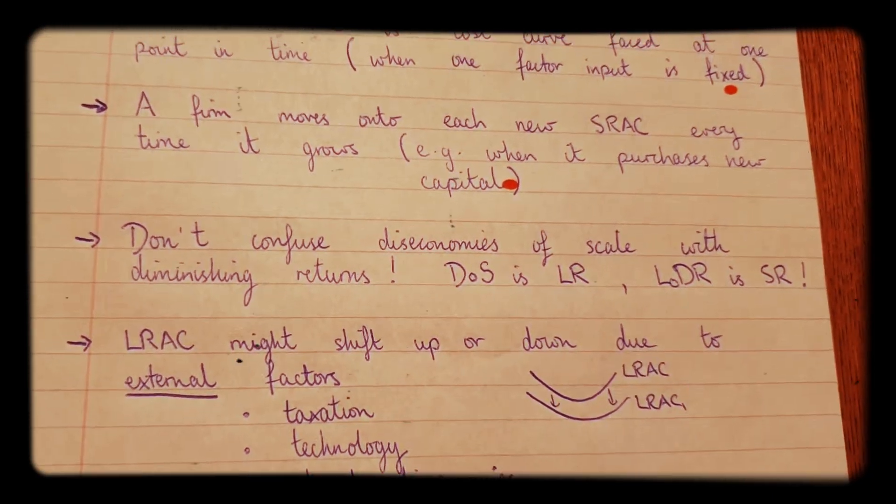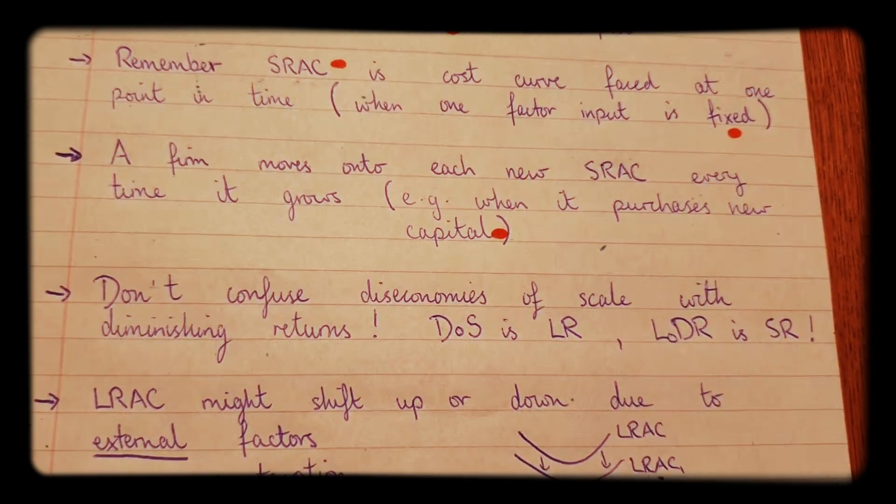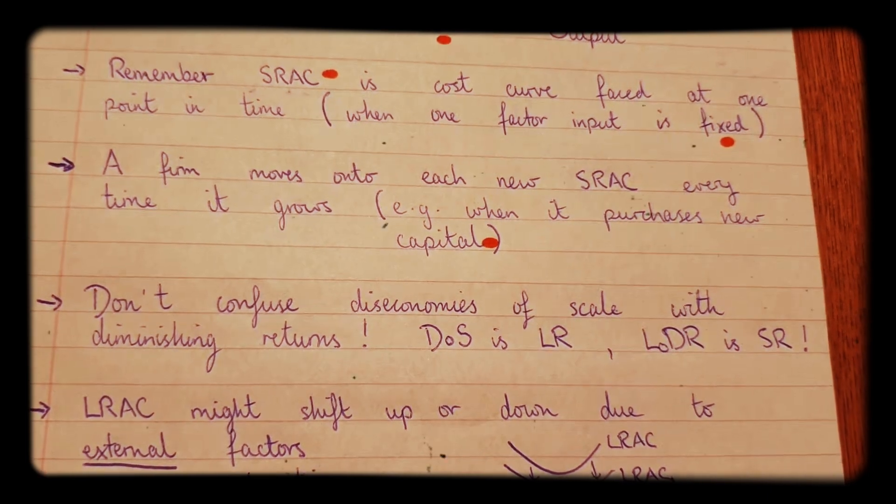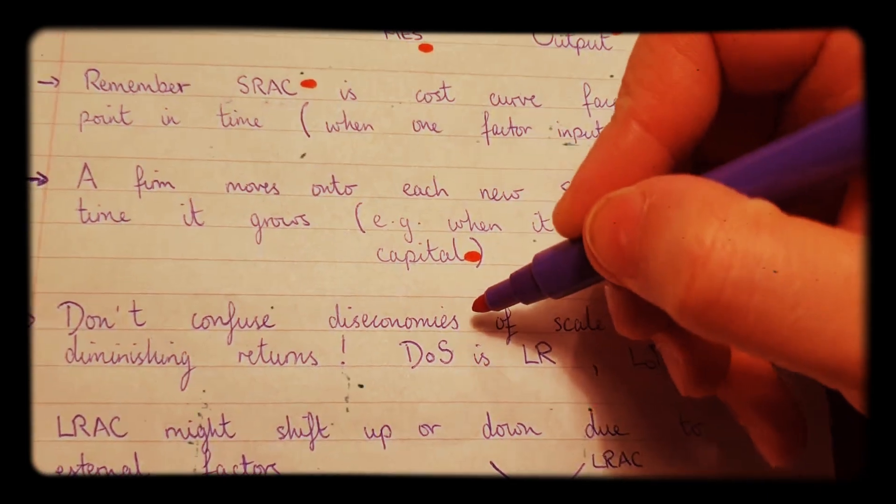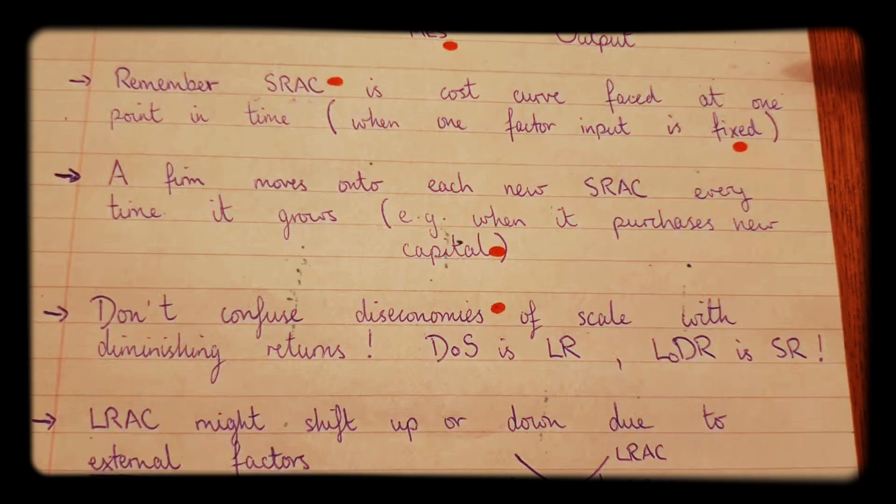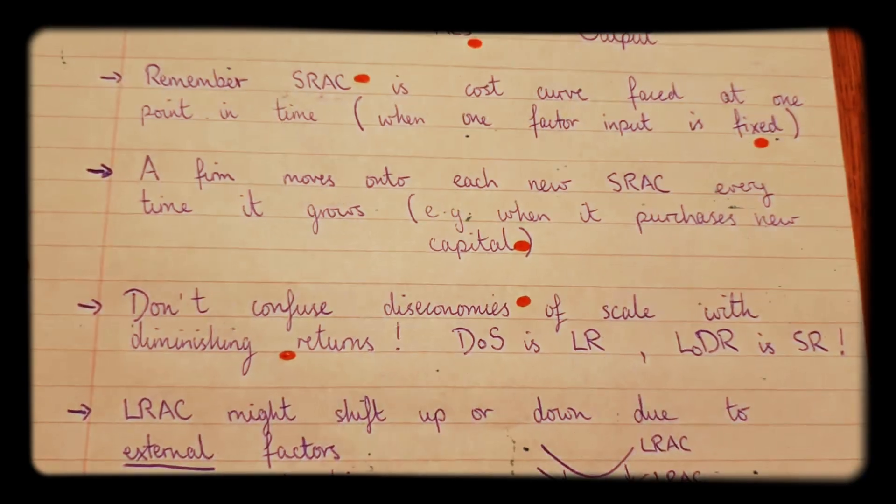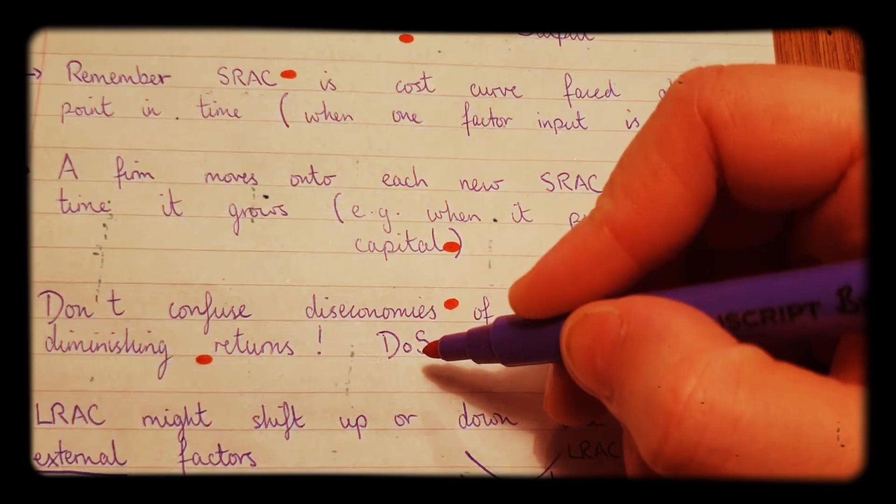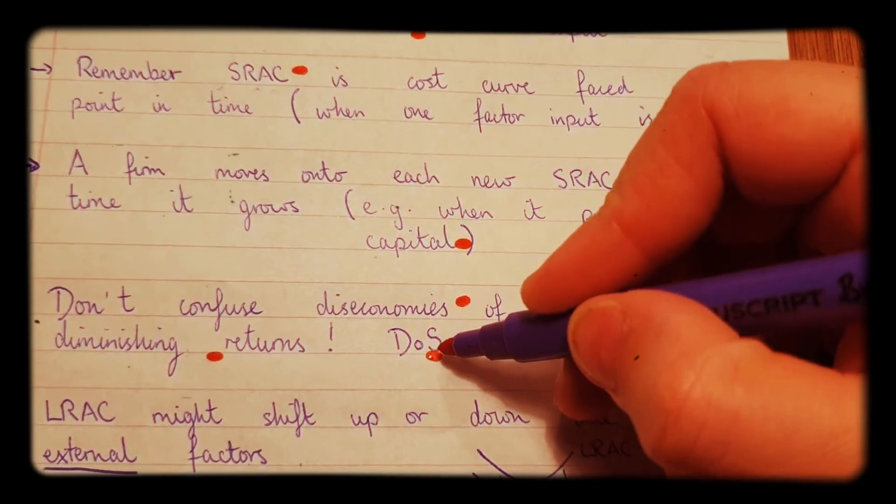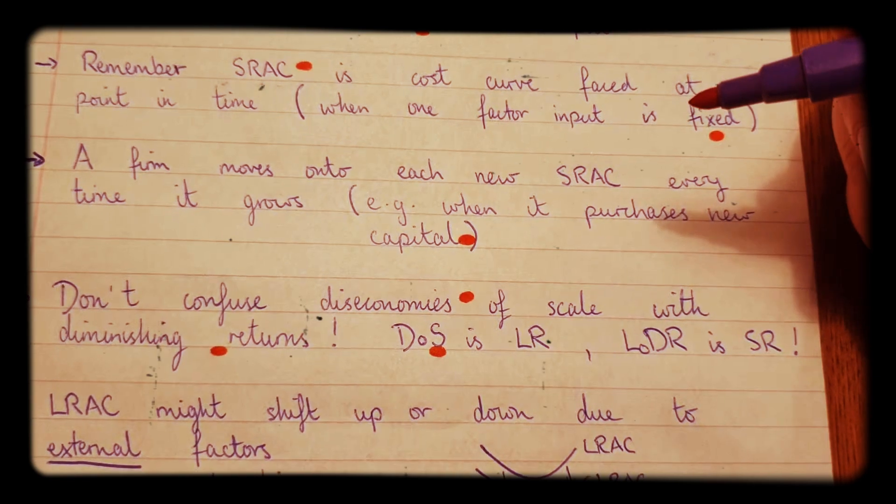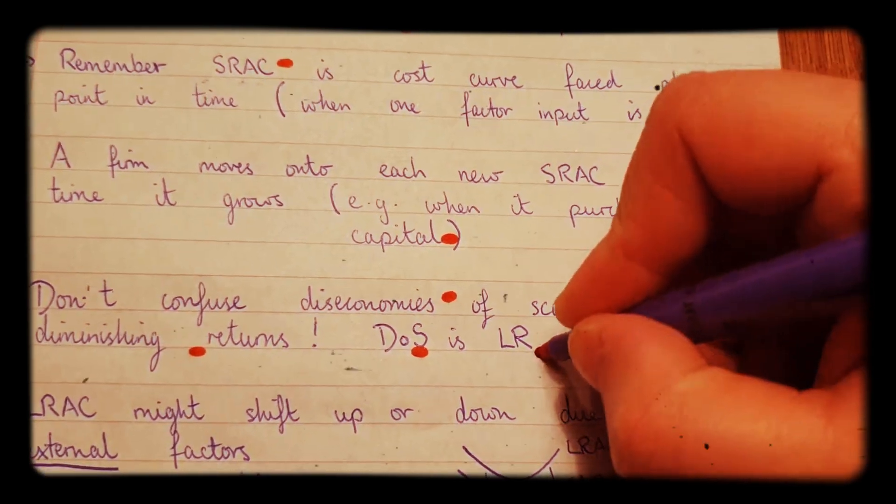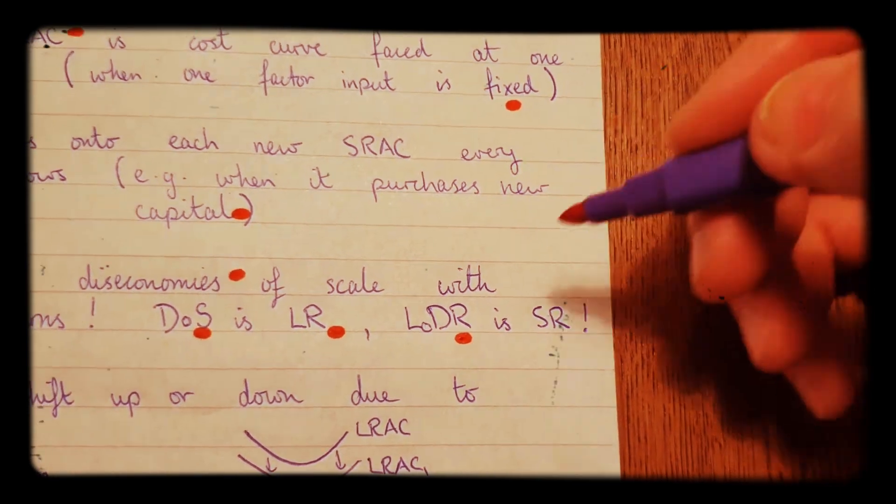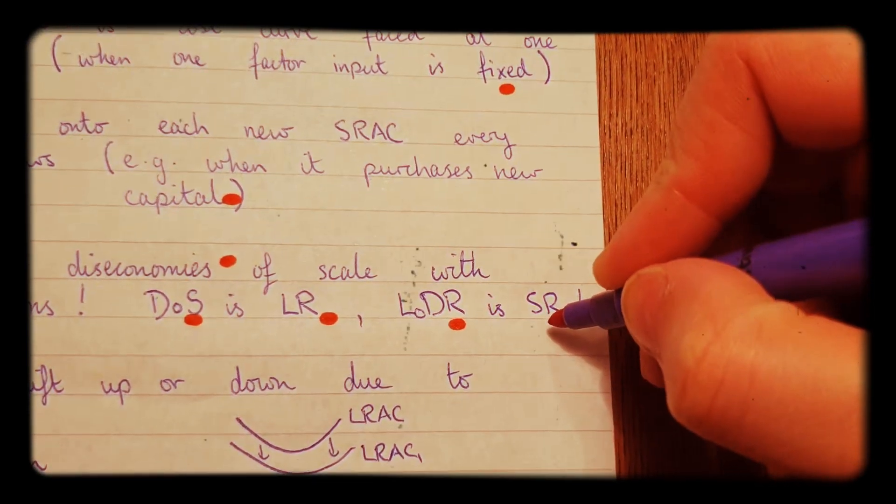The other thing I will say with this is, because I've seen this many times via tutoring various students, do not confuse diseconomies of scale with diminishing returns. It's not the same thing. Diseconomies of scale, DOS as I've put it here, diseconomies of scale is long run. The law of diminishing returns is in the short run.